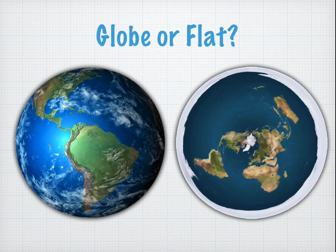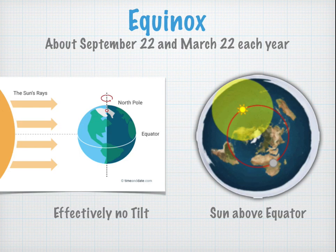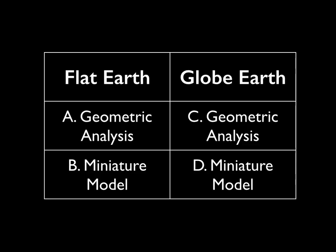Let's do an analysis to determine if our pattern of shadows supports the globe-earth model or the flat-earth model. Remember, on the equinox, on the globe-earth model, there's essentially no tilt to the Earth's axis, whereas on the flat-earth model, the Sun is tracing a path right above the equator. The analysis in this video is a little more complicated, so we're going to break it down four ways: geometric analysis and miniature model for both flat Earth and globe Earth.